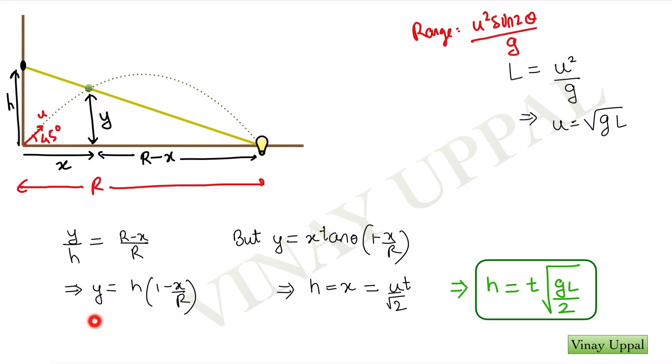But this relation should look very familiar to you from the equation of trajectory. So y is equal to x tan theta into 1 minus x by r where r is the range is also one of the forms of equation of trajectory which is not very often used. But in this question, it is very useful because you can just compare both of these. And I know tan theta is 1 because of the 45 degree angle. And just compare and you will get h is equal to x.